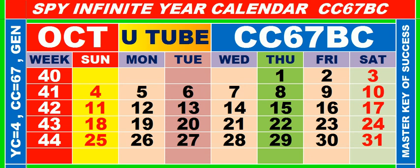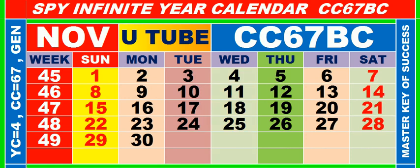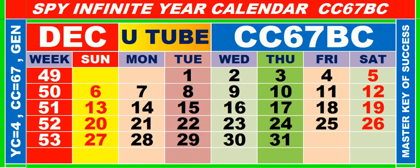Calendar for the month of October, having calendar code equal to 67. Calendar for the month of November, having calendar code equal to 67. Calendar for the month of December, having calendar code equal to 67.